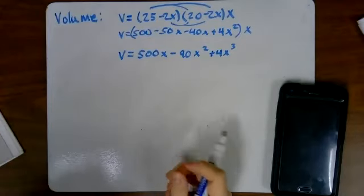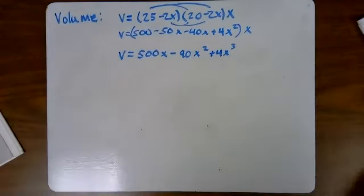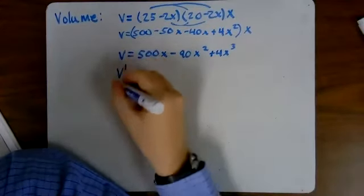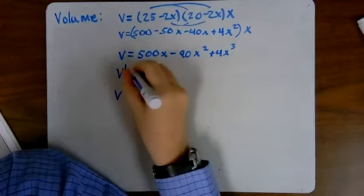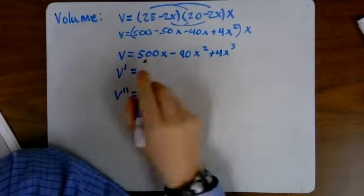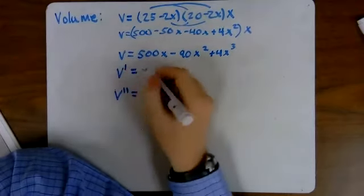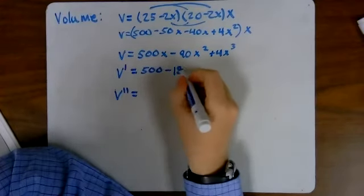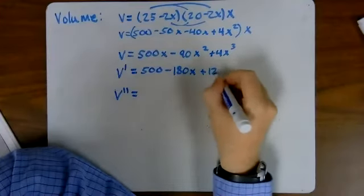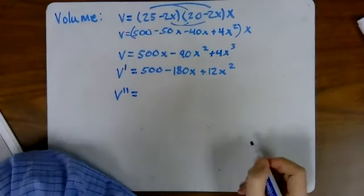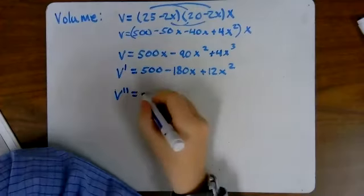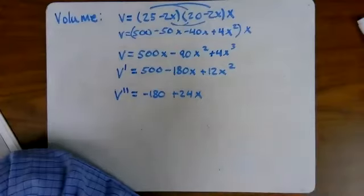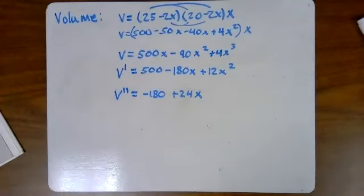Okay, this is a lot easier for us to use the second derivative test. So let's find our first and second derivatives. So our first derivative here will be 500 minus 180x plus 12x squared. Second derivative is negative 180 plus 24x.